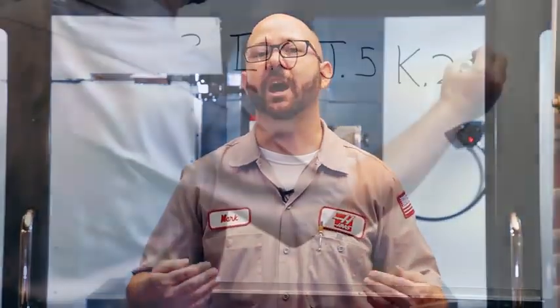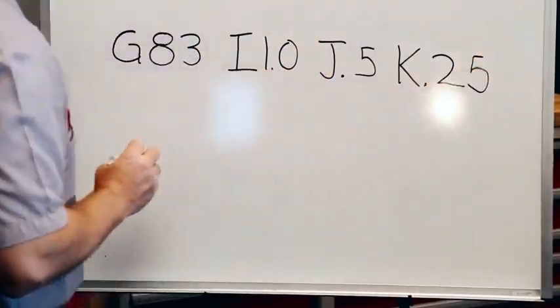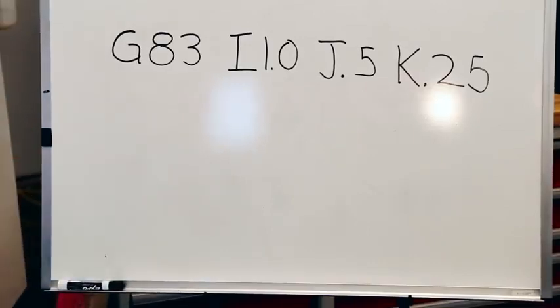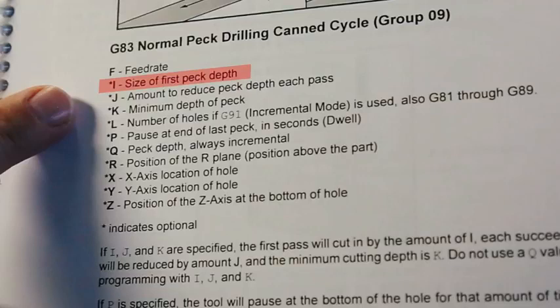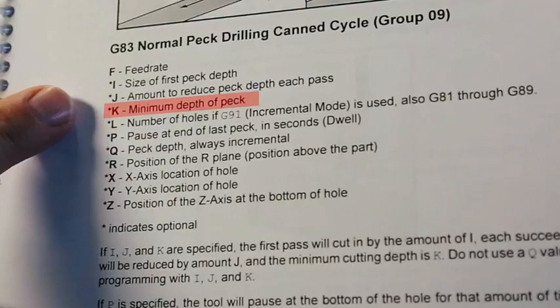Typically, depending on the material, we can go three to five times the diameter of the tool for that first peck, and then with each successive peck we can take less and less material. So how do we program progressively smaller pecks? We're going to use that same G83 code, except this time we're going to use IJK pecks instead of Q-pecks. Our I value is that initial peck — how far do we want it to drill on the first pass. Our J value is how much we want to reduce that peck each time. And our K value is our minimum peck amount — the smallest amount we want to drill by.